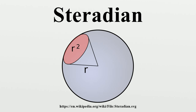A steradian can be defined as the solid angle subtended at the center of a unit sphere by a unit area on its surface. For a general sphere of radius R, any portion of its surface with area A equal to R² subtends 1 steradian. The solid angle is related to the area it cuts out of a sphere, where A is the surface area of the spherical cap (2πRH) and R is the radius of the sphere. Because the surface area of a sphere is 4πR², the definition implies that a sphere measures 4π steradians.